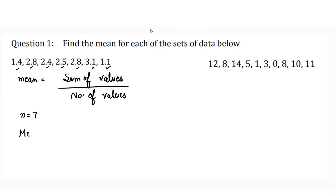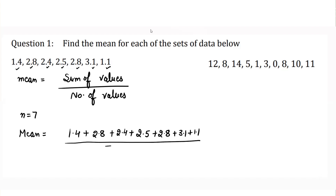We find the mean: 1.4 plus 2.8 plus 2.4 plus 2.5 plus 2.8 plus 3.1 plus 1.1, divided by 7. When you add all these values together you get 16.1 divided by 7, and when you divide it by 7 you get 2.3. So the mean for this set of data is 2.3.